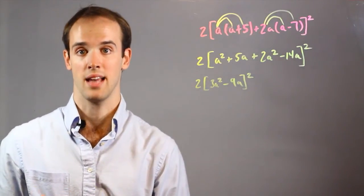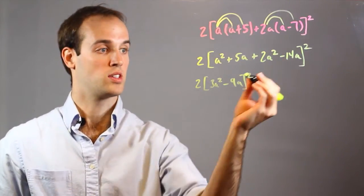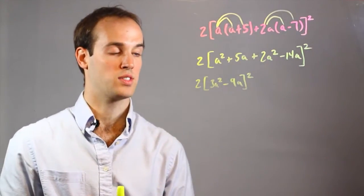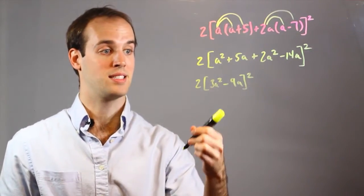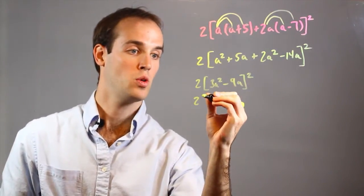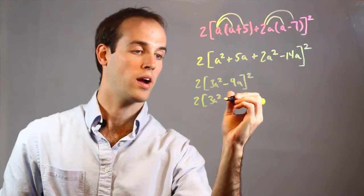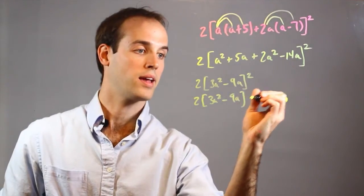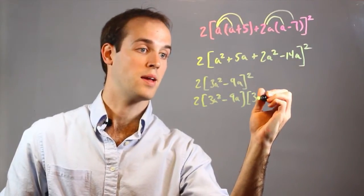So I'm going to move on to my next step, exponents. And you can see I have an exponent right here on the outside. So what this literally means is two of these brackets multiplied together. So I have 2[3A² - 9A][3A² - 9A].